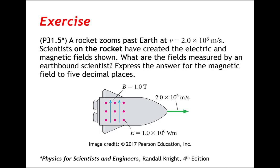When observers in one reference frame measure an electric and a magnetic field, observers in another reference frame may measure different values for those fields. Our task is to determine the electric and magnetic fields that observers on Earth would measure, given what the electric and magnetic fields are as measured by the observers in the rocket ship. To do this, let's turn to our whiteboard.